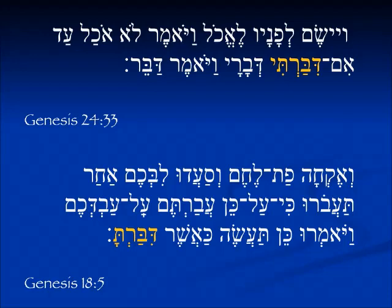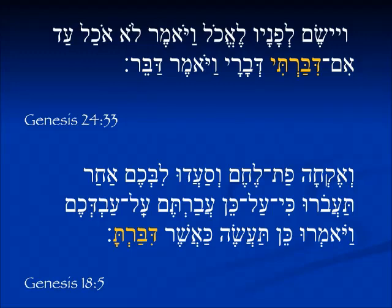In the first person example from Genesis 24:33, the servant has come, he's found a bride for Isaac, and now he is at Laban's house. They put the food before him. He says, 'I'm not going to eat anything, im di-bar-ti d'vari,' until I have spoken the words I have to say. And he said, 'dabar' — that's a command form. In the second person masculine singular, Genesis 18:5, Abraham is speaking to the men. He says, take some bread before you carry on. The men say, 'ken ta'ase ka'asher di-bar-ta' — yes, you will do what you have said.